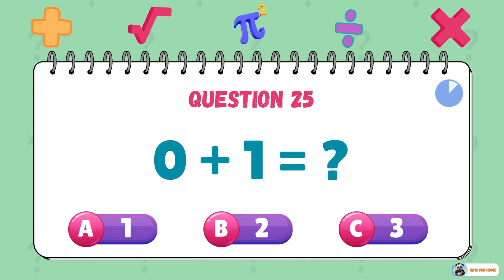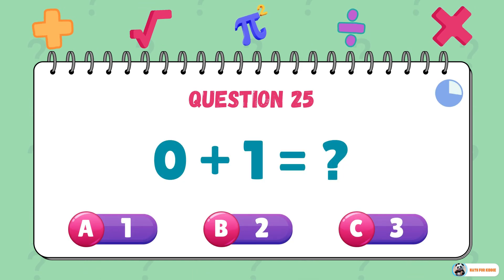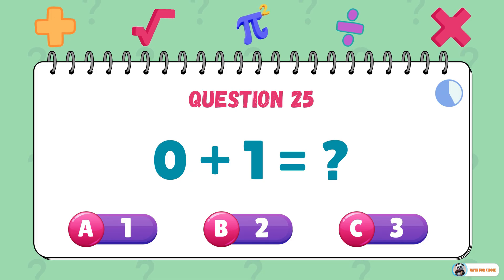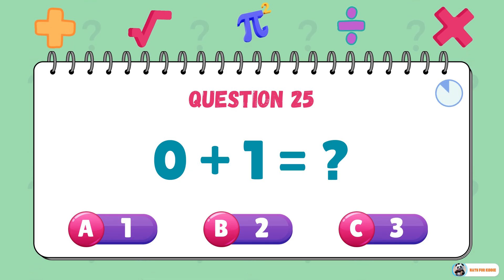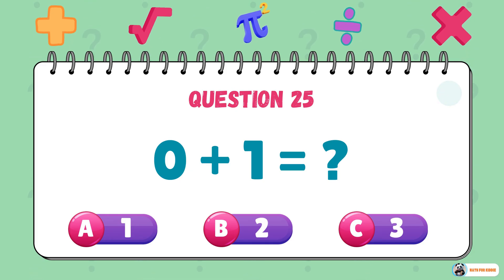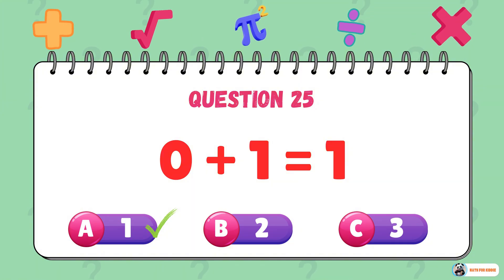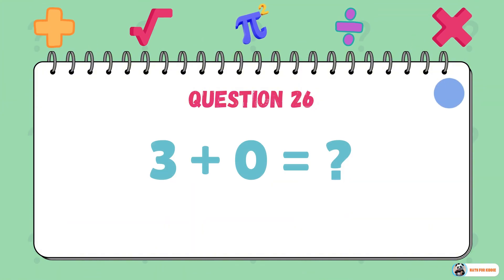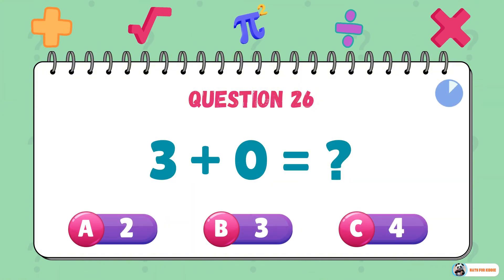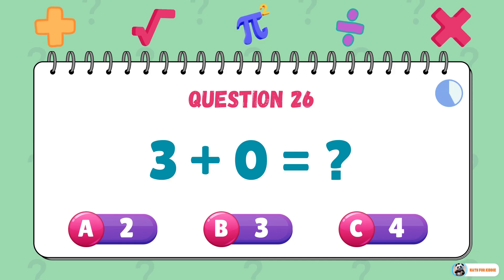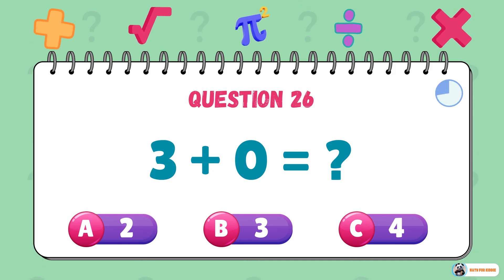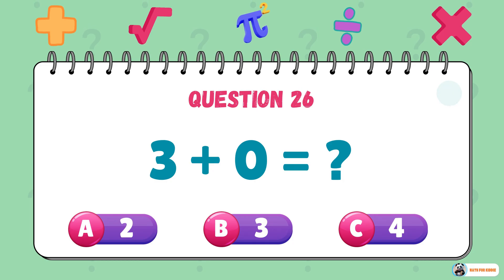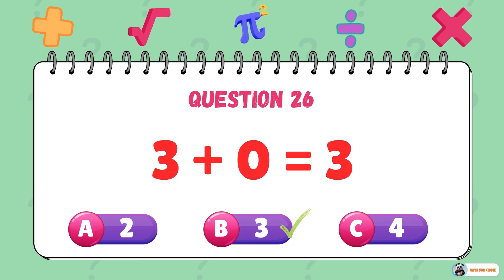What is 0 plus 1? The answer is 1. What is 3 plus 0? The answer is 3.